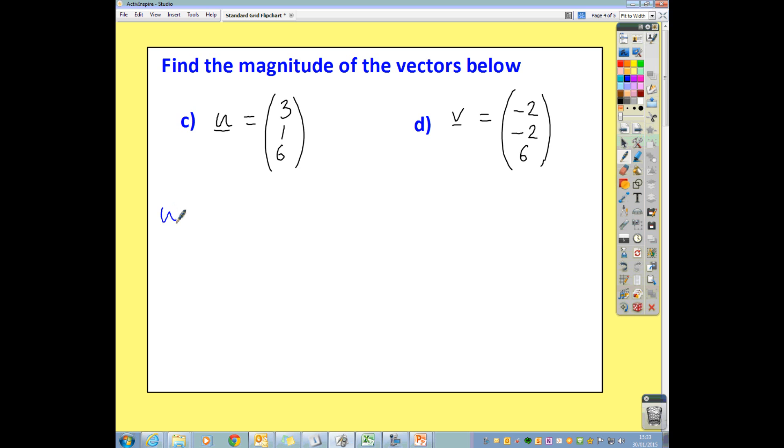Back to the u here, to find its magnitude, take our components, and add up the square of each of the components, square root what you've got, so you end up with the square root of 9, plus 1, plus 36, so that is the square root of 46, and we'll just leave it like that.